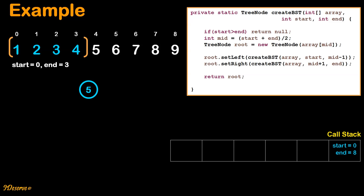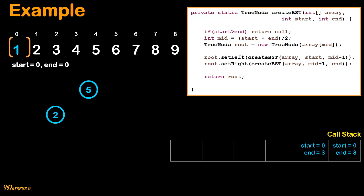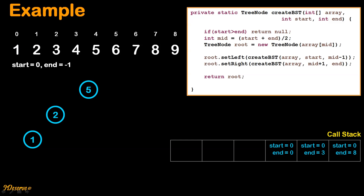Resuming code execution: here start index is 0 and end index is 3. Since start is less than end, we move on to the next step. We calculate mid which is 1, then create a tree node with the mid element. Next we call the function recursively for the left sub-array where start index is 0 and end index is 0. We store the current function state in the call stack. Since start is greater than end, we return null. We go back to our previous call stack where start index was 0 and end index was 0 — again start is greater than end, so we return null.